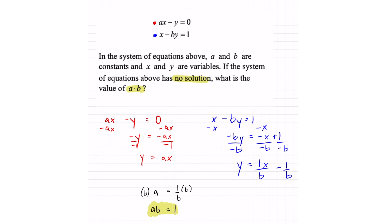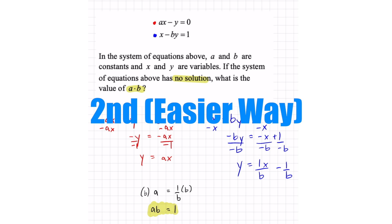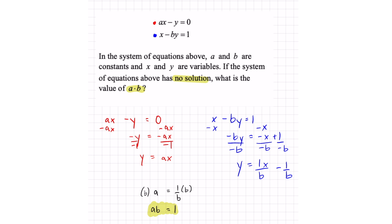So this is a hard question. It usually shows up on the last portion of the SAT when there's no multiple choice. Take a look at this. In order for it to be no solution, the coefficients next to the x's have to be the same. The coefficients next to the y's have to be the same. And the constants have to be different.